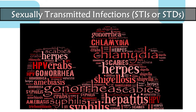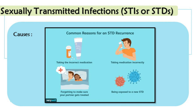Sexually transmitted infections (STIs) or sexually transmitted diseases (STDs) are diseases transmitted through sexual intercourse. They are also known as venereal diseases (VD) or reproductive tract infections (RTI). Examples include gonorrhea, syphilis, genital herpes, chlamydia, genital warts, trichomoniasis, hepatitis B, and HIV. Except hepatitis B, genital herpes, and HIV — which are viral — others are curable. Common reasons for STD recurrence include taking incorrect medication, failing to ensure your partner is treated, and being exposed to a new STD.